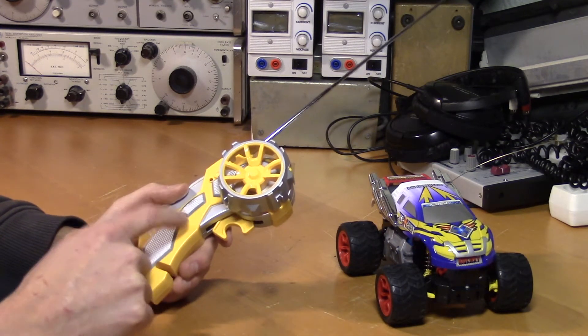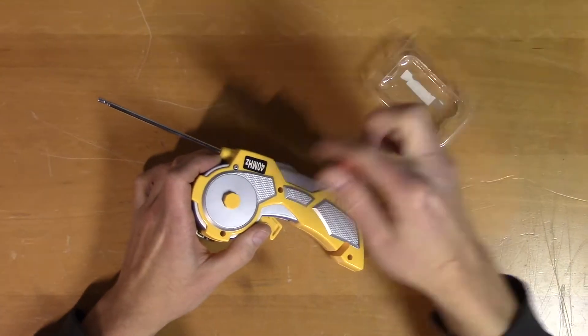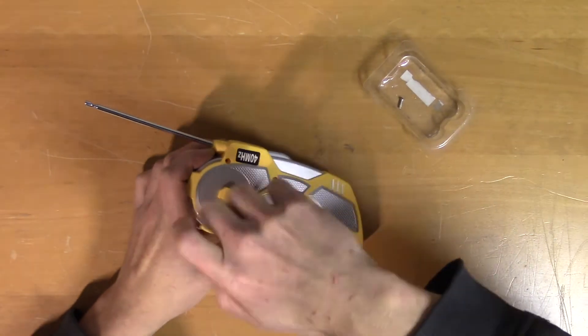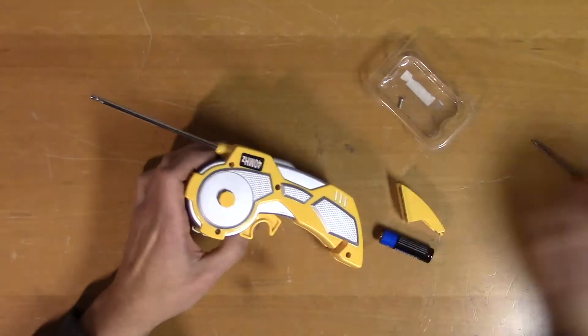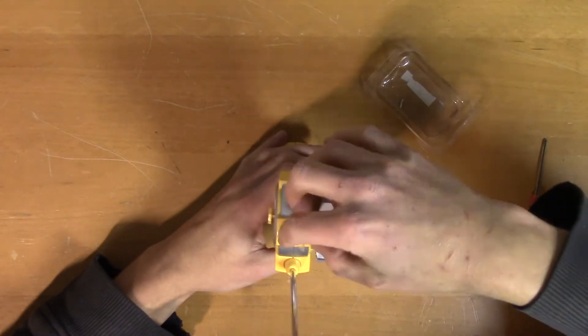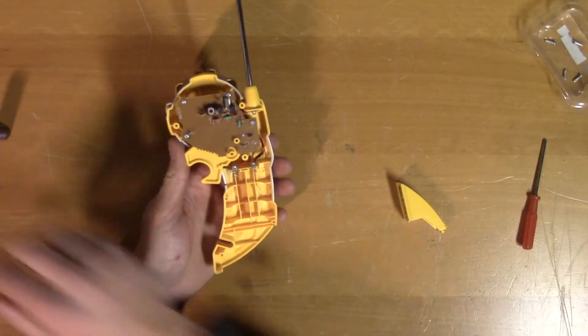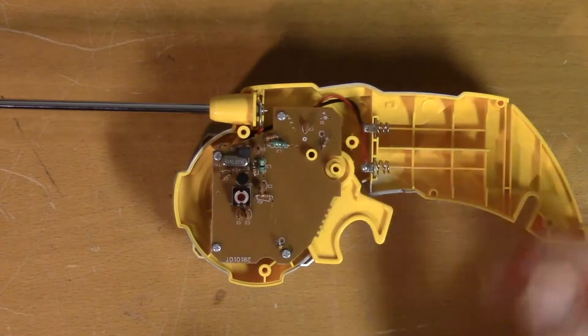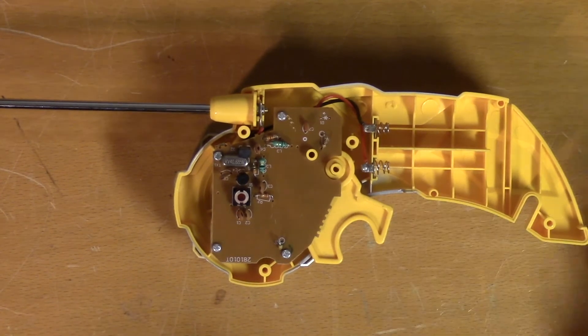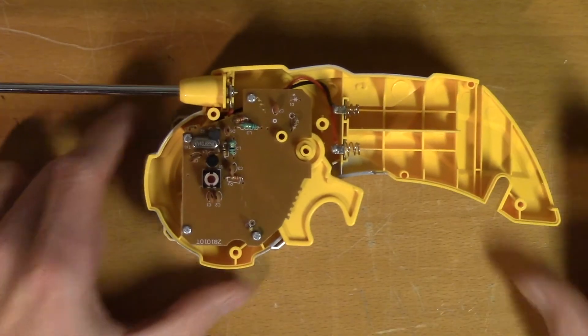So let's start by opening up the remote control. I'm glad to see they've only used through-hole components. That gives us a greater chance to figure out what is going on without the schematic. Now I'm going to feed this from a power supply rather than batteries, because it's easier and I can monitor the current.